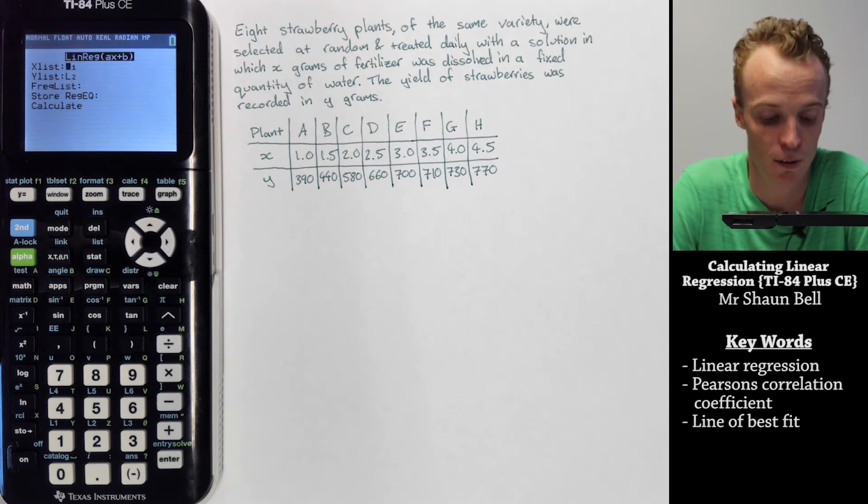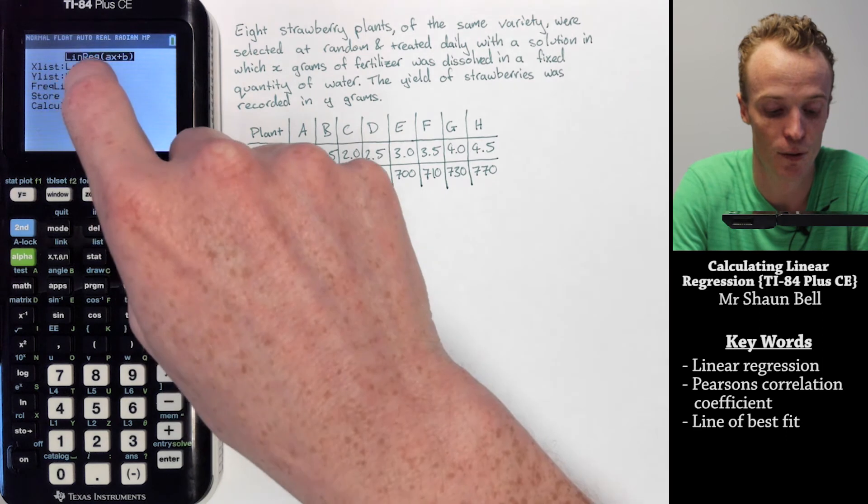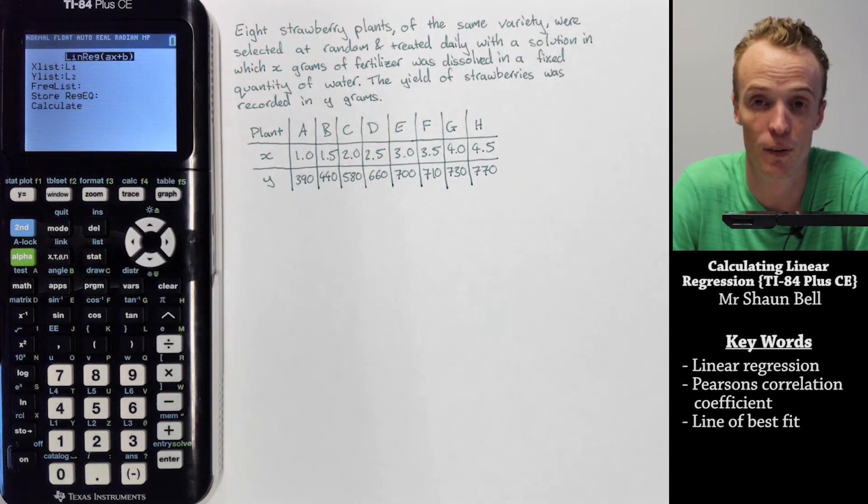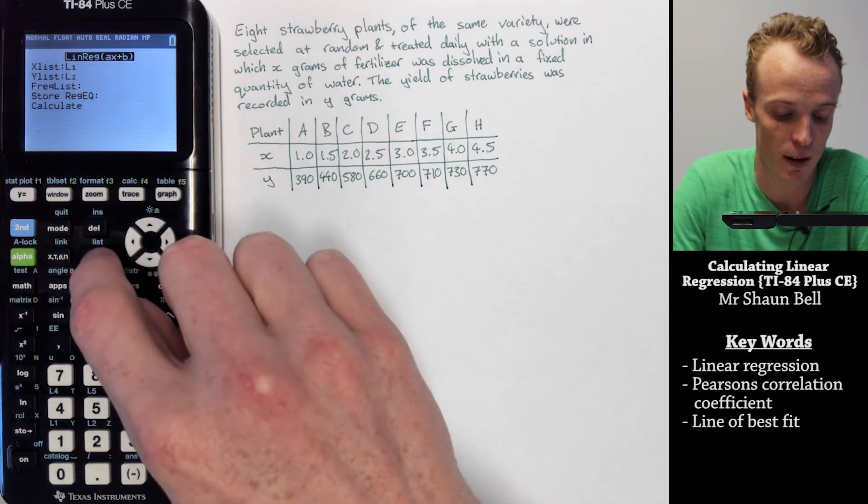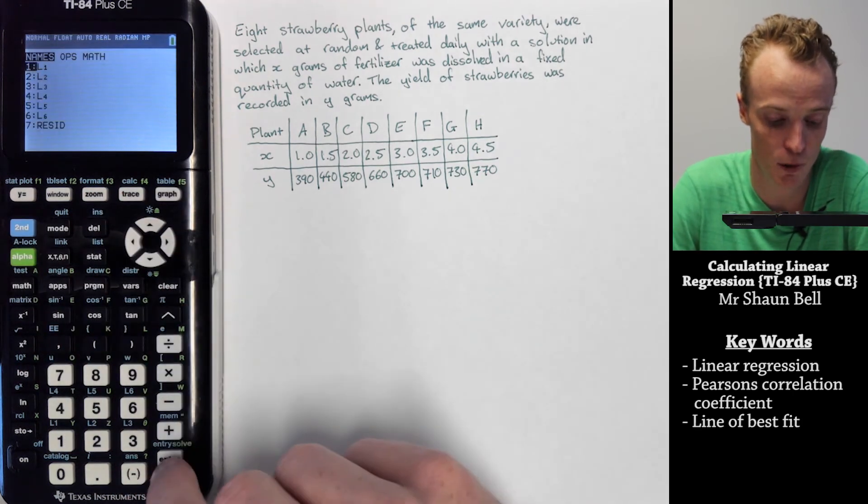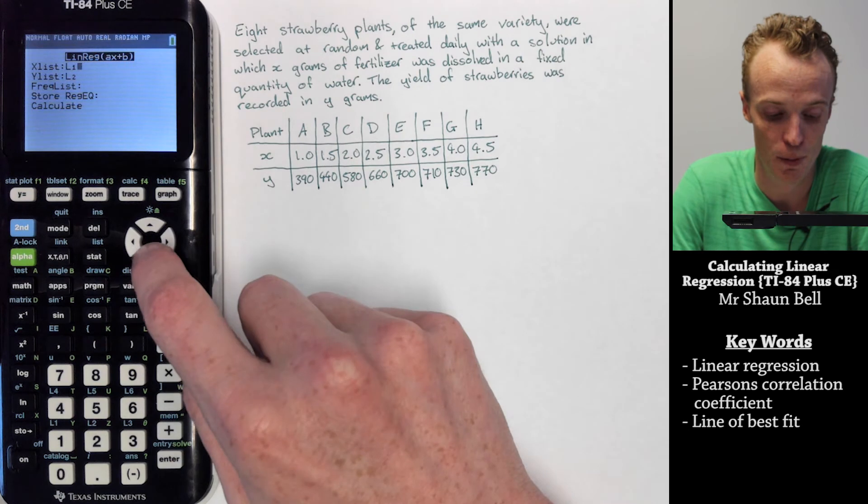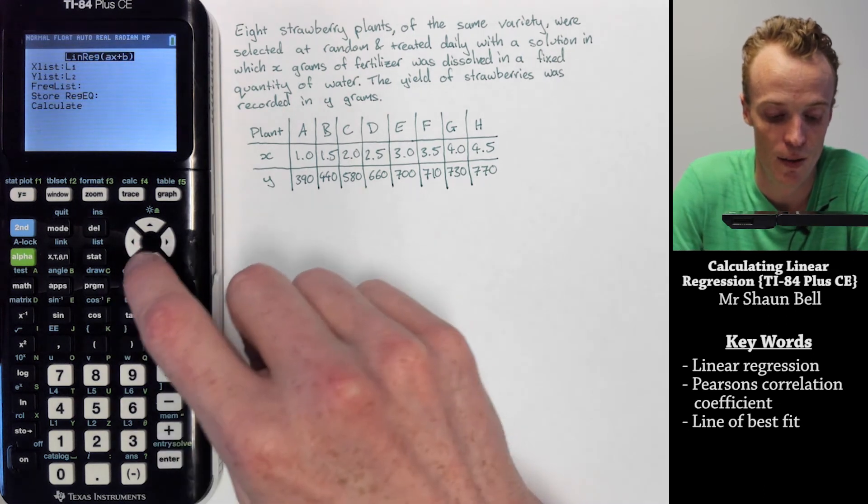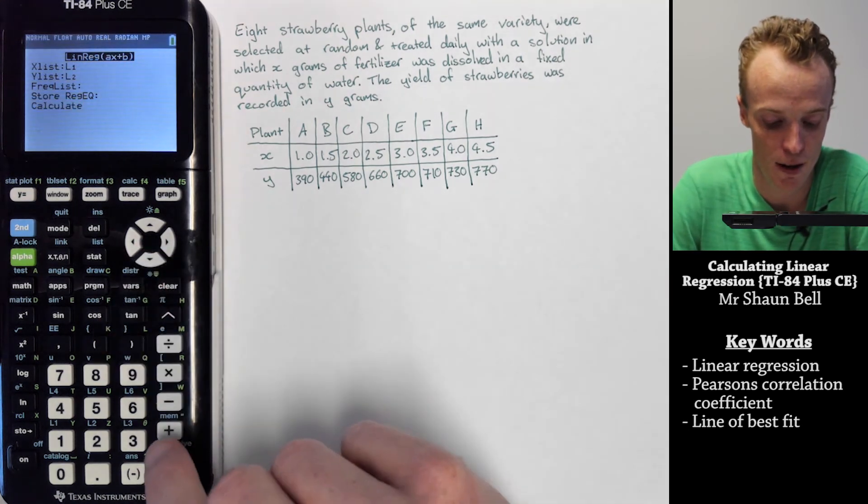What it's now asking you is which list is the x values in? It's currently in list 1, so I'm going to leave it there. But if you need to change it, you hit second and list and select which list it's under. You repeat for the y list, and then you drop down and hit calculate.